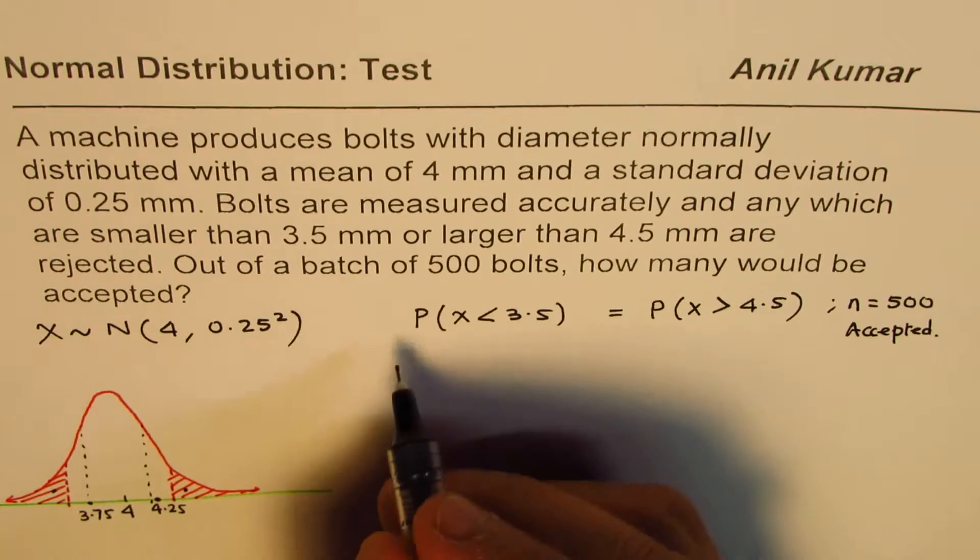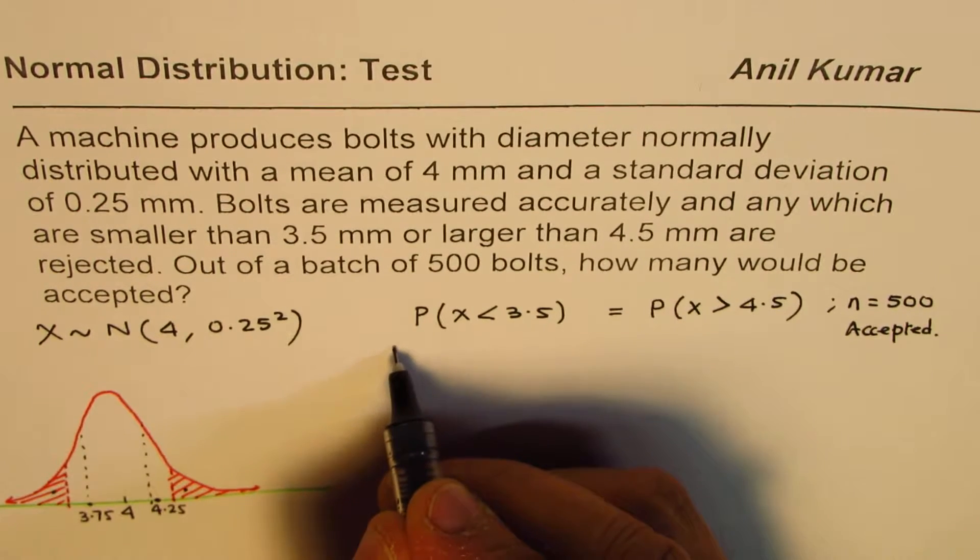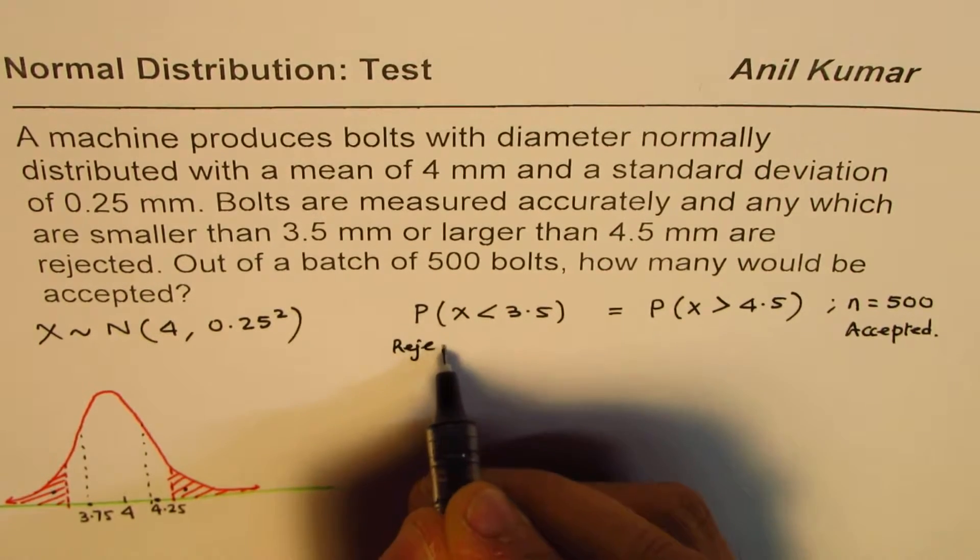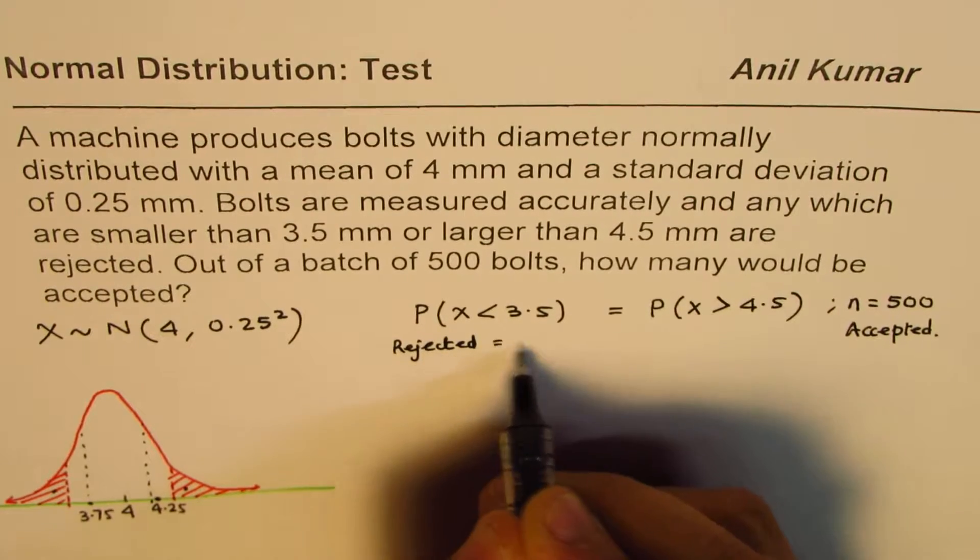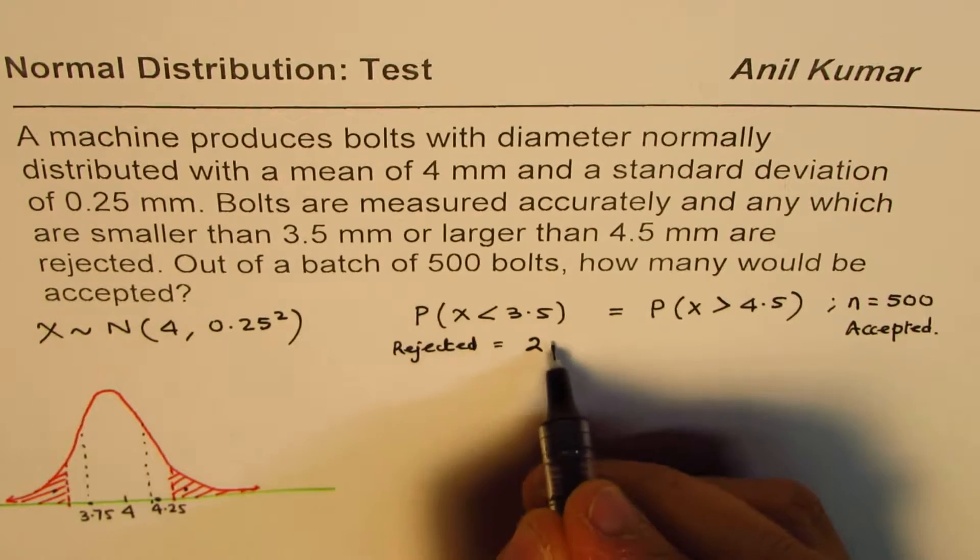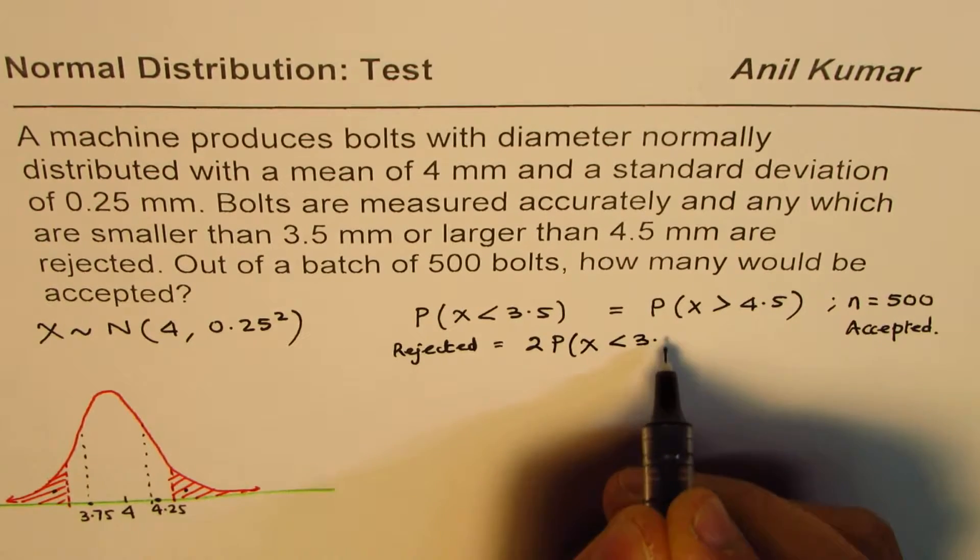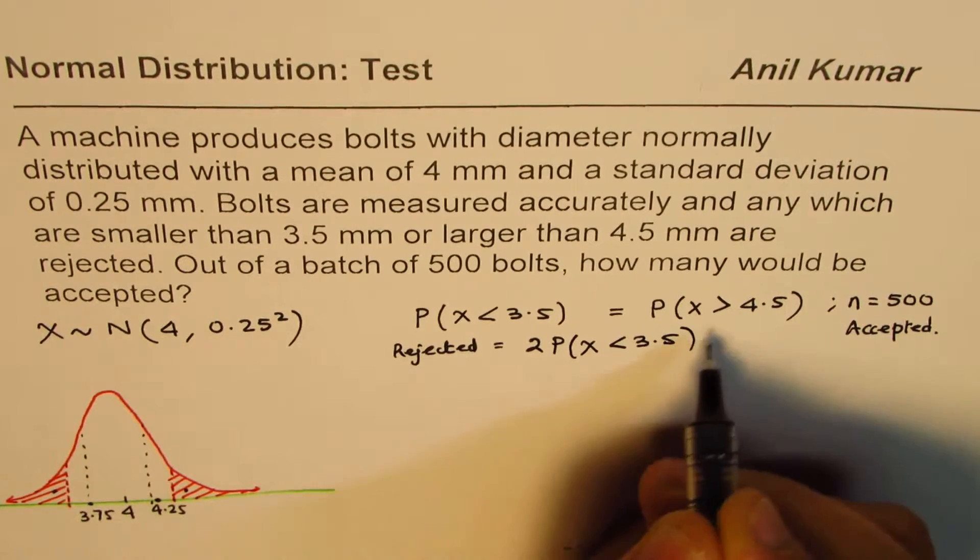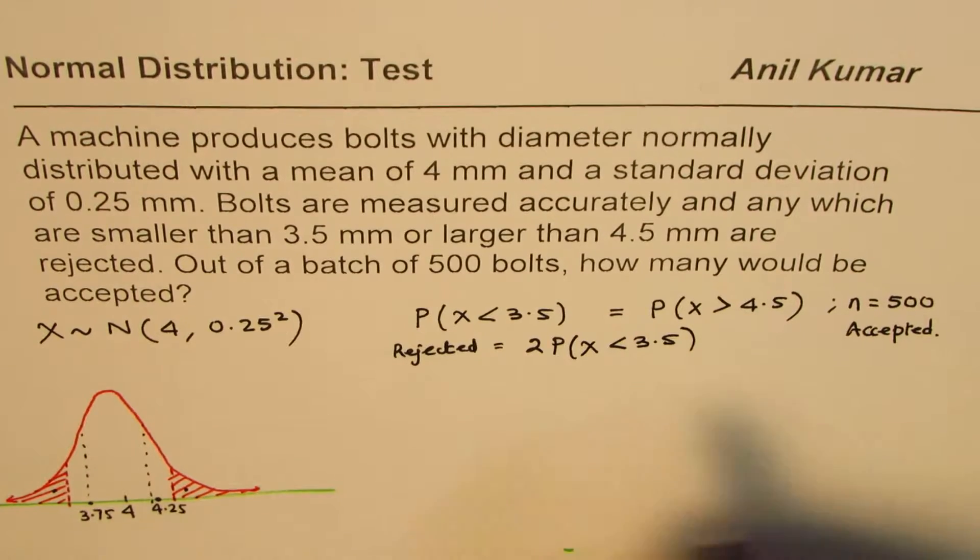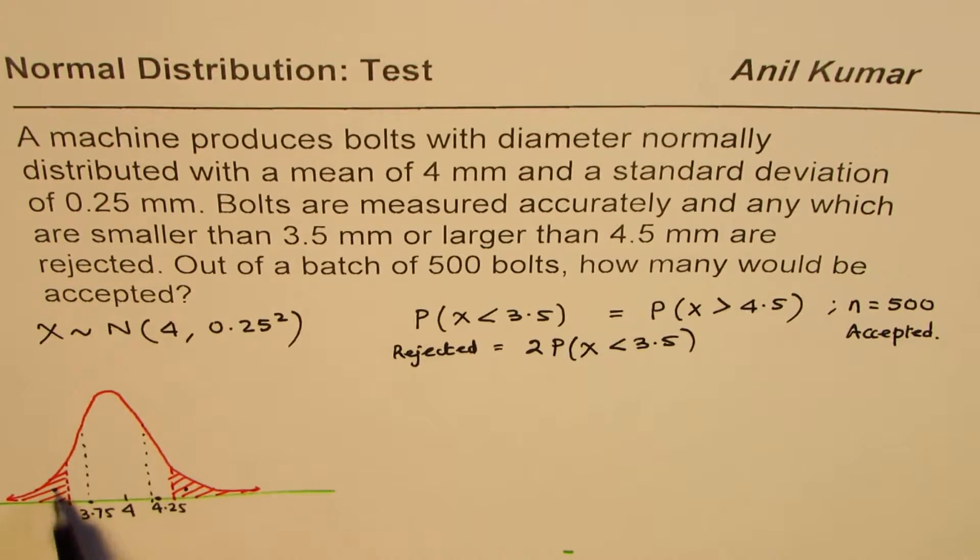So we can say that rejected is two times probability of x less than 3.5. So instead of trying to find both of them, from the symmetry we notice twice this.